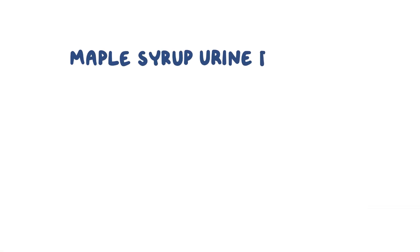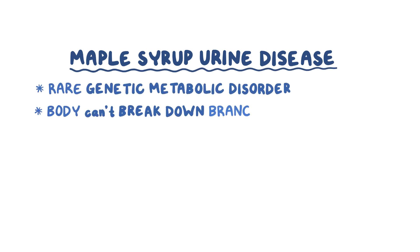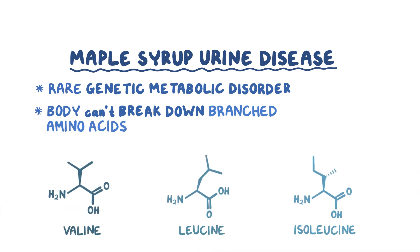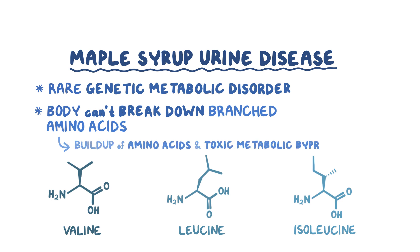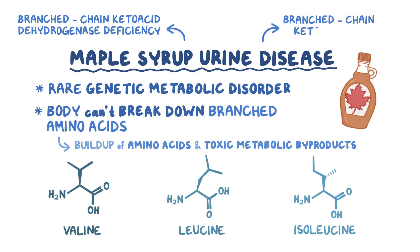Maple syrup urine disease is a rare genetic metabolic disorder where the body cannot break down branched-chain amino acids like valine, leucine, and isoleucine completely, which causes a buildup of these amino acids and their toxic metabolic byproducts. It was named maple syrup urine disease since the urine that contains these metabolites smells like maple syrup. Other names for this disease include branched-chain ketoacid dehydrogenase deficiency, or BCKD deficiency, and branched-chain ketoaciduria.